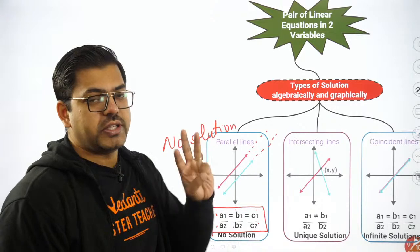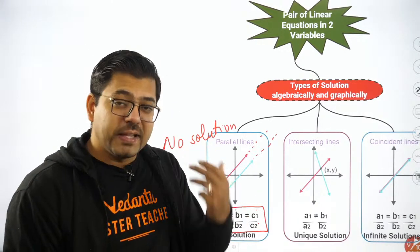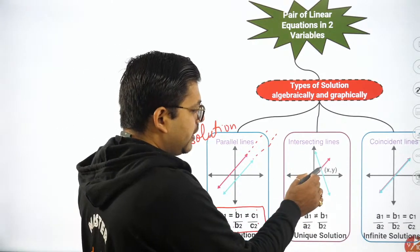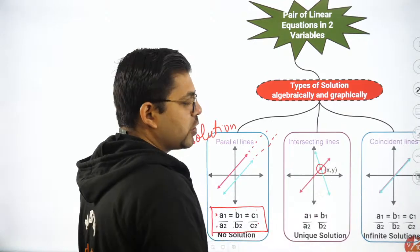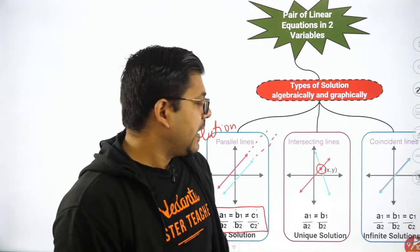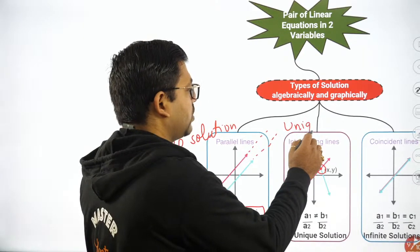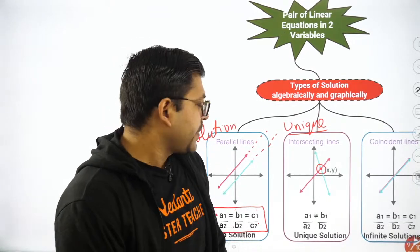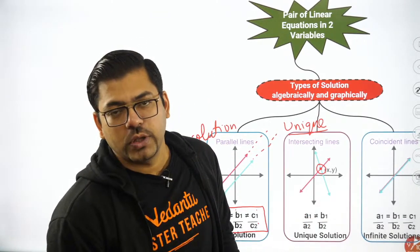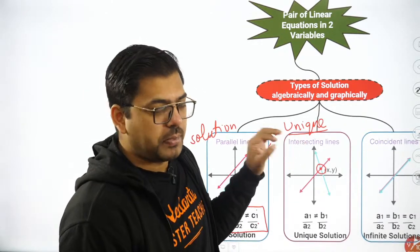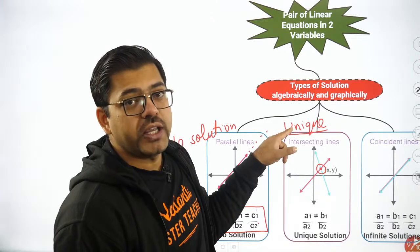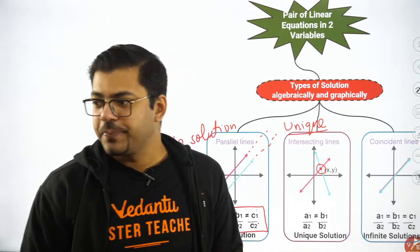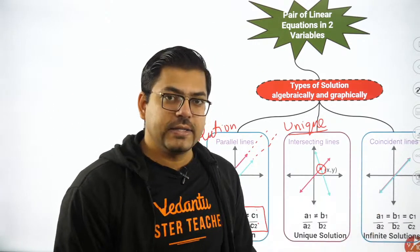For intersecting lines: the lines intersect at one point, and that one point is your solution — precisely one solution. That is why we call it the unique solution condition. The condition for the coefficients is a1/a2 ≠ b1/b2. Write it down: intersecting lines → unique solution → a1/a2 ≠ b1/b2.